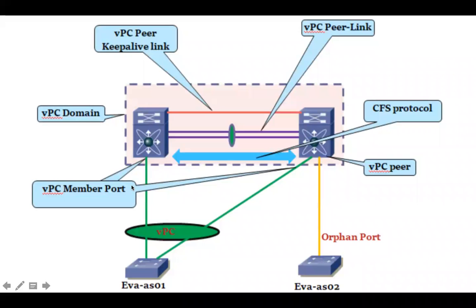VPC domain is used to define global parameters for VPC. The peer keepalive link is a Layer 3 link which is used to monitor the status of the VPC peer — whether the remote peer is alive or not. This is done by exchanging keepalive messages on UDP port 3200.